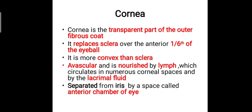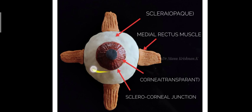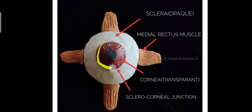The cornea is avascular but nourished by lymph and lacrimal fluid. It is separated from the iris by a space called the anterior chamber of the eye, which lies between the cornea and the lens and is filled with aqueous humor. This aqueous humor is drained through the canal of Schlemm at the sclerocorneal junction, also known as the limbus.